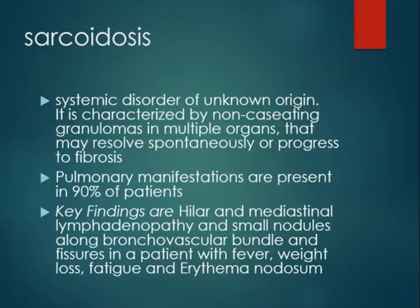The most specific feature to keep in mind when thinking of sarcoidosis is bilateral, symmetrical hilar lymphadenopathy. When you see this, the first differential diagnosis is sarcoidosis, followed by leukemia, lymphoma, and tumors. If it is not bilateral and symmetrical, keep sarcoidosis low in the differential diagnosis, not high.